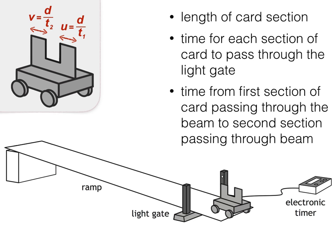In order to calculate acceleration, we would need to know the time between the first section passing through the light gate and the second section passing through it.